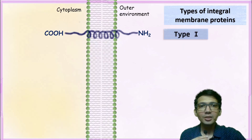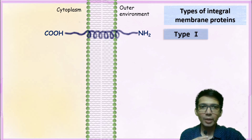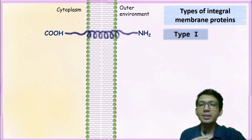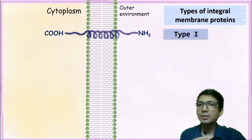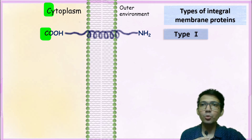The type 1 integral membrane protein is arranged such that the C-terminal remains in the cytoplasm whereas the N-terminal remains in the outer environment. A simple trick to remember this is that C stands for cytoplasm and C stands for COOH group. So this is type 1 integral membrane protein.